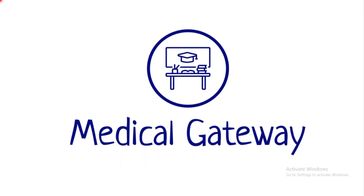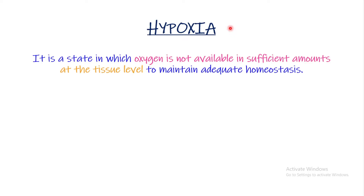Assalamualaikum everyone, this is guiding chapter number 43. In this part we have been discussing hypoxia. Hypoxia is a state in which oxygen is not available in sufficient amounts at the tissue level to maintain adequate homeostasis. When we think of hypoxia, the key point is that oxygen level is reduced specifically at the tissue level.